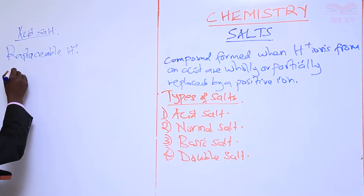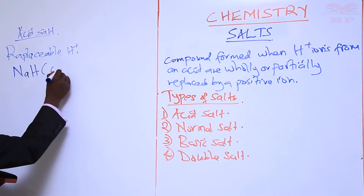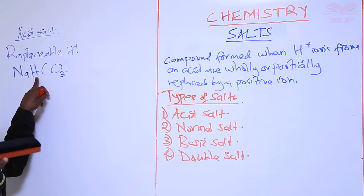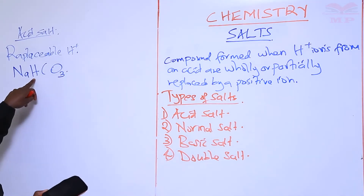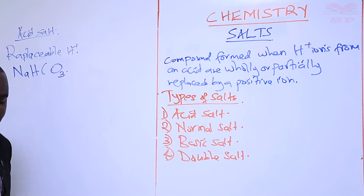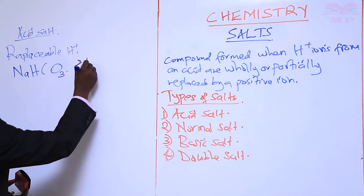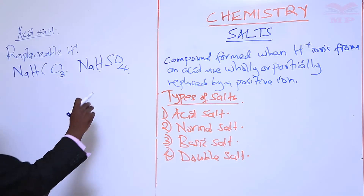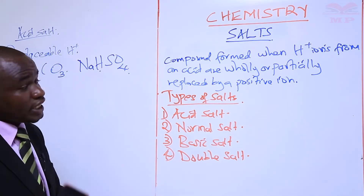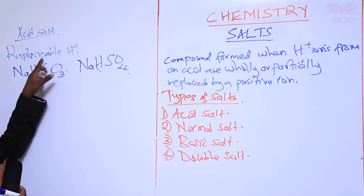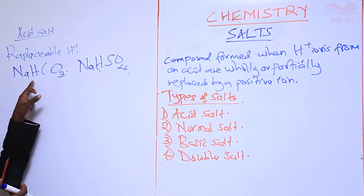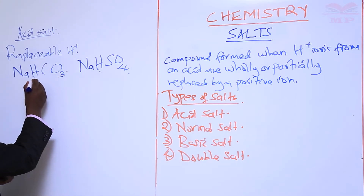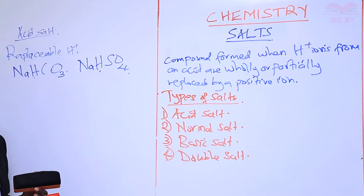For example, we have sodium hydrogen carbonate (NaHCO₃). From the formula we can see that it has a hydrogen ion, which makes this salt an acid salt because it gives it acidic properties. Another example is sodium hydrogen sulfate (NaHSO₄). The hydrogen ion present in this salt is the one that gives it acidic properties. Therefore, both sodium hydrogen carbonate and sodium hydrogen sulfate are called acid salts.